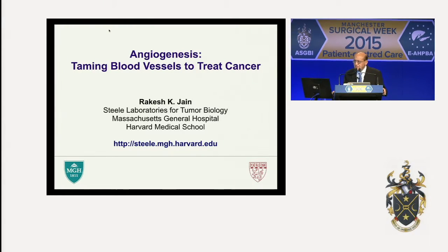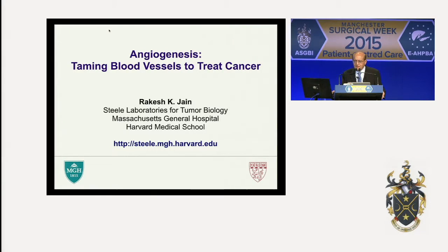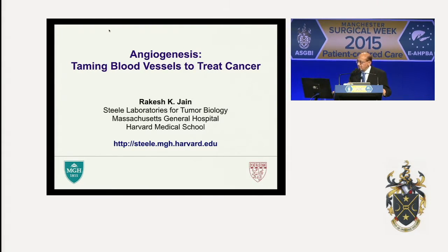This abnormality fuels tumor progression and resistance to treatment. What our laboratory has done for the last decade and a half is try to tame these blood vessels, try to normalize their function. What I'm going to show you is the evidence for normalization not only in animal models but also in cancer patients, and show you how normalizing these blood vessels can improve the outcome of therapy.